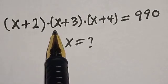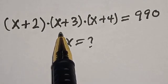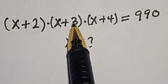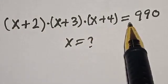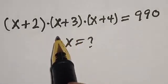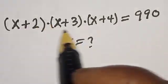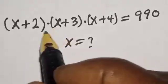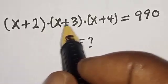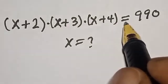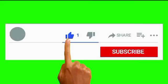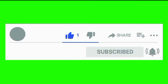Problem: (s + 2) multiplied by (s + 3) multiplied by (s + 4) is equal to 990. What is the value of s? Hi everyone, welcome to my class. In this class we want to find the value of s from this given equation. Before we proceed, please don't forget to like, share, comment, and subscribe.